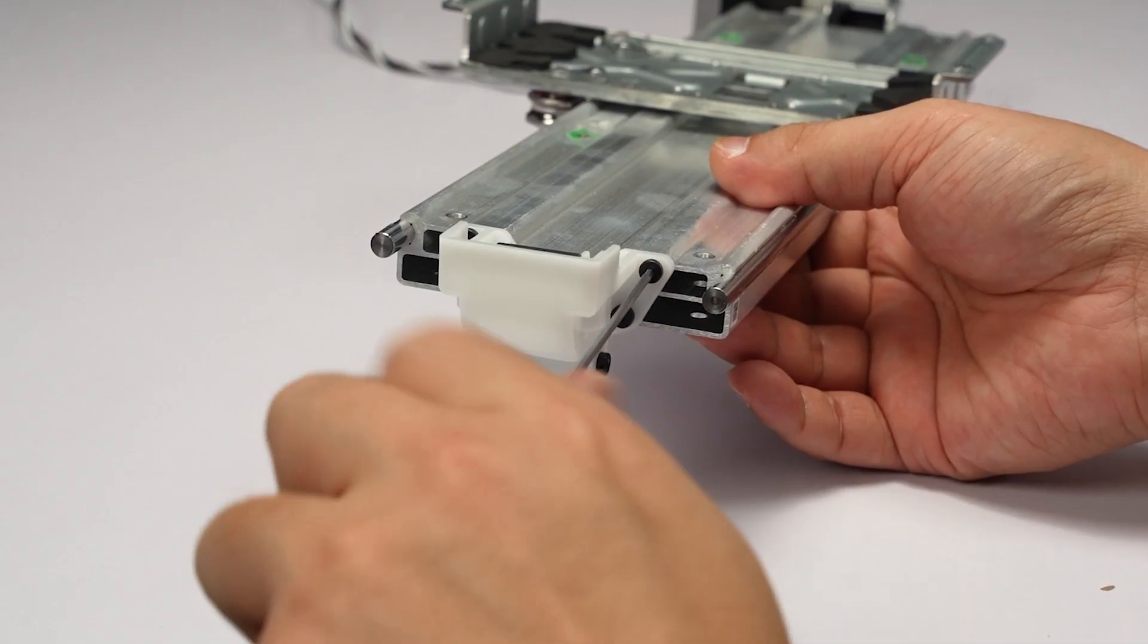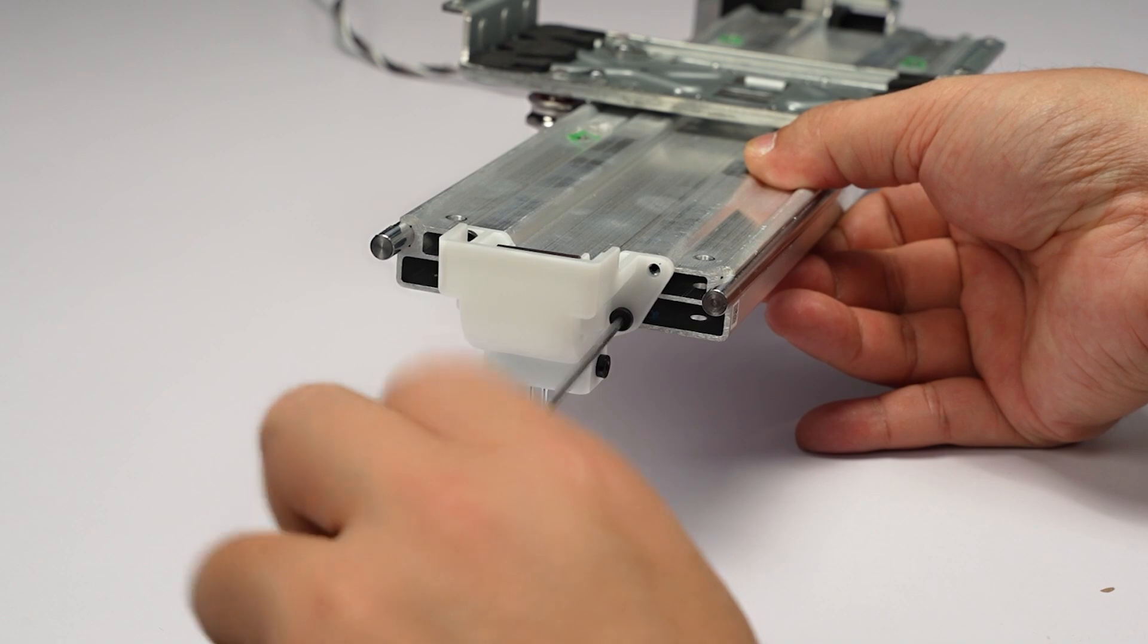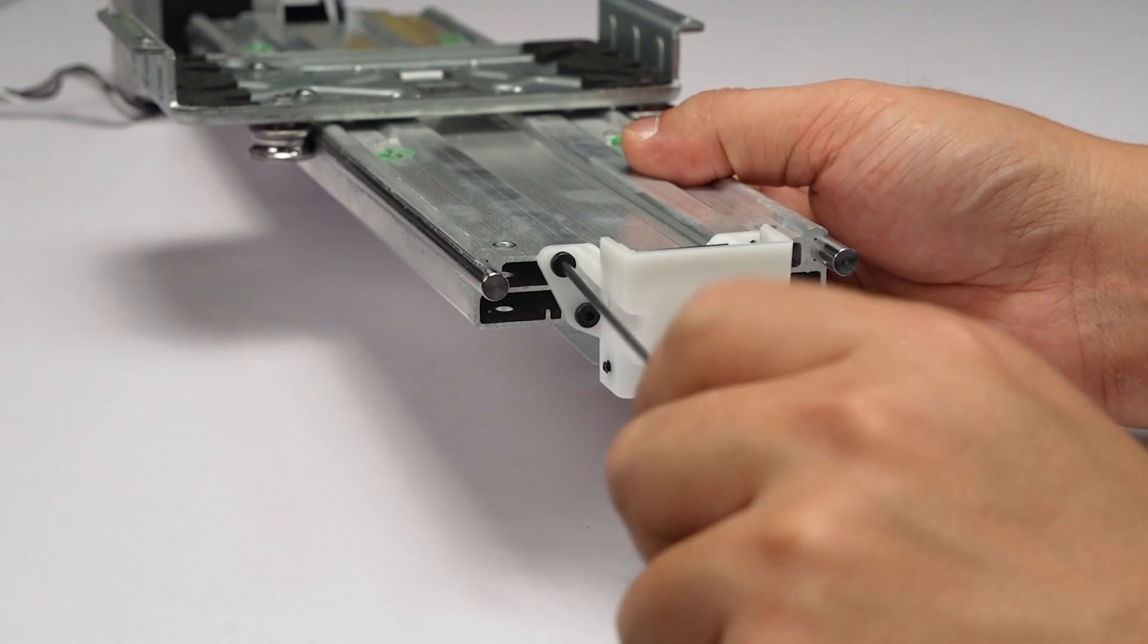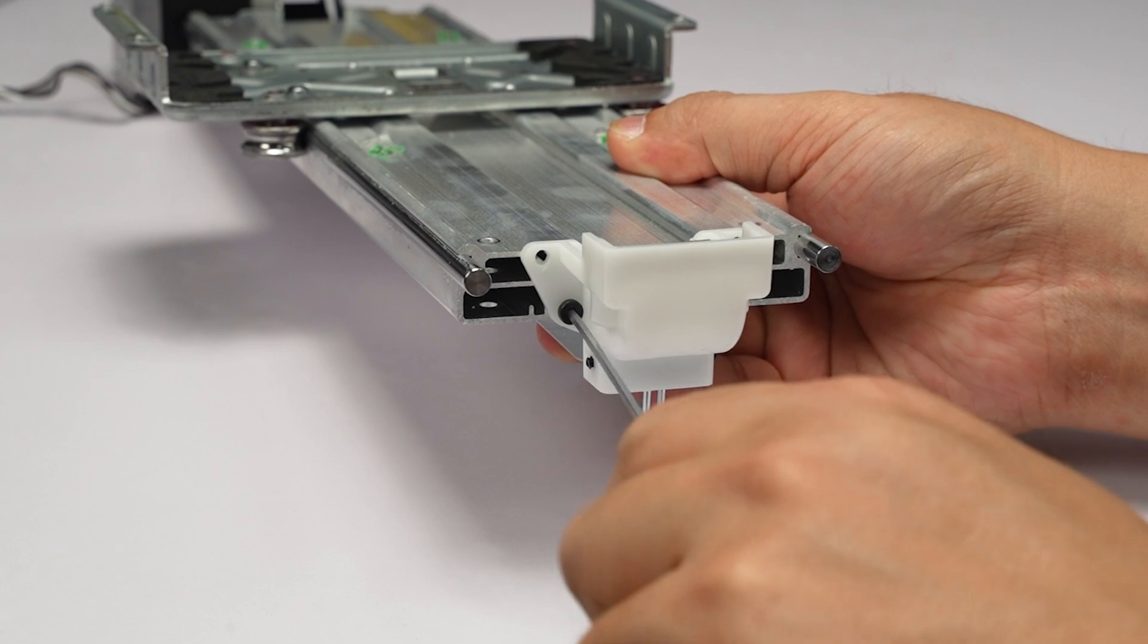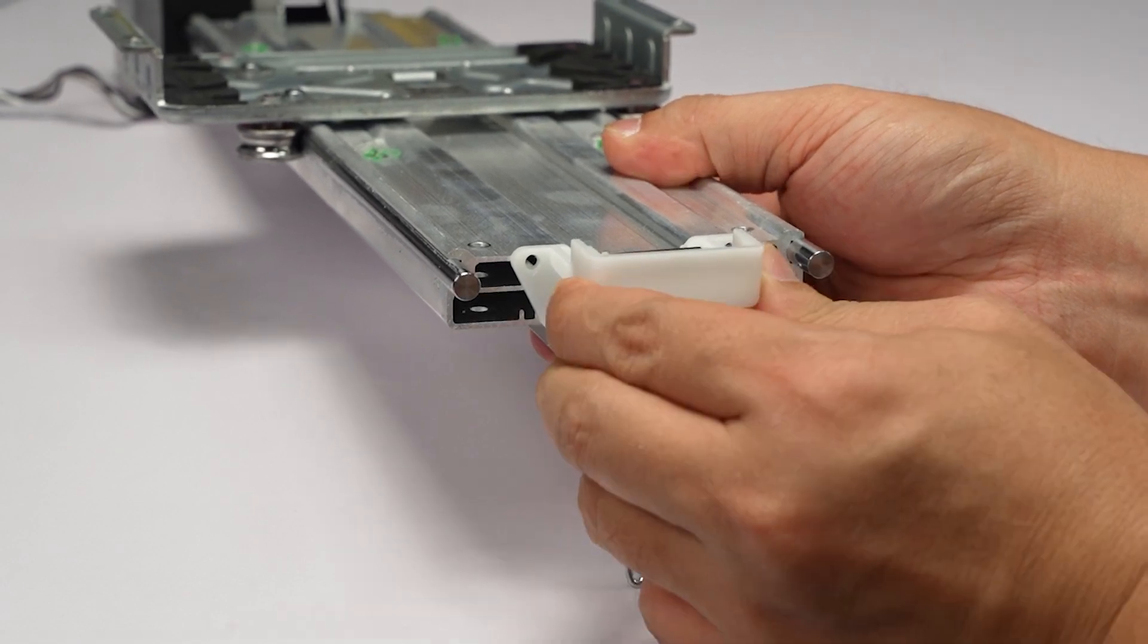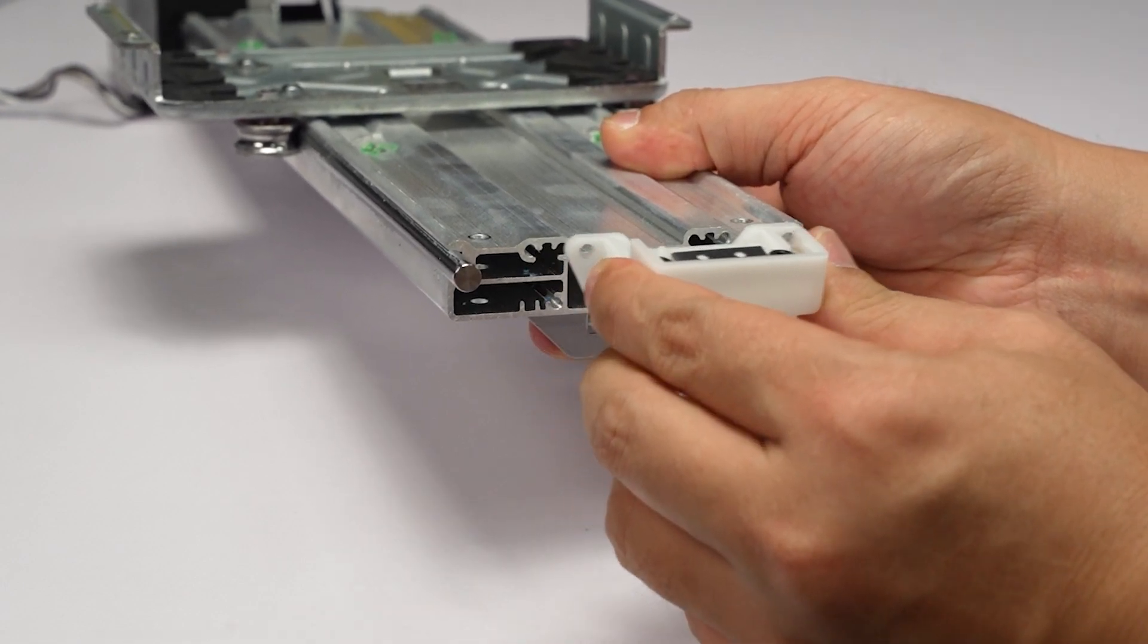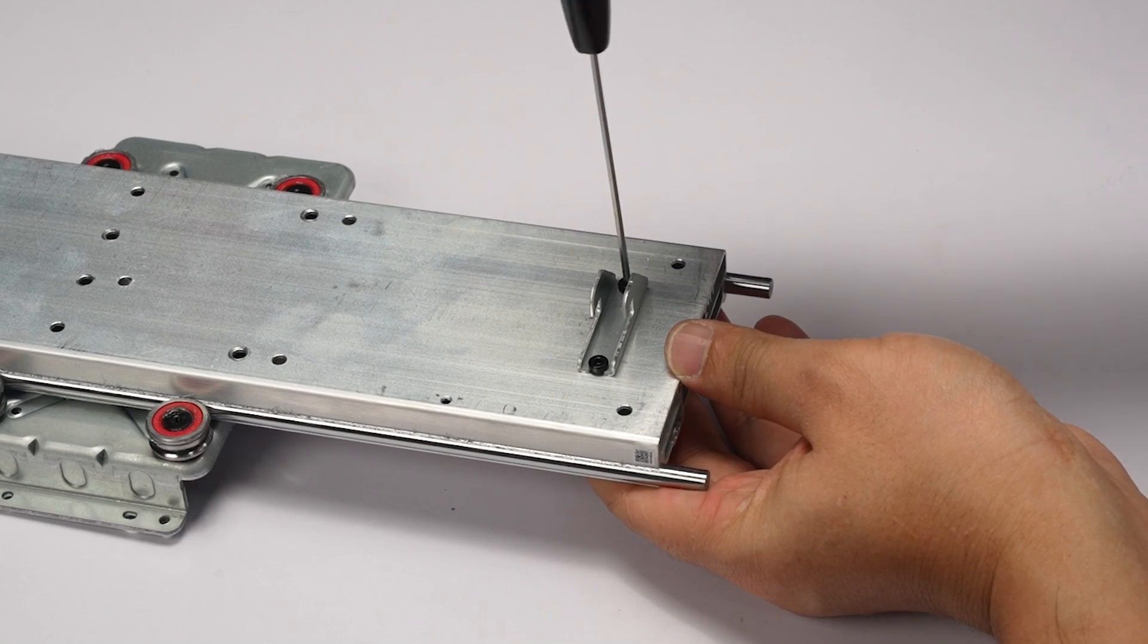Remove four screws in the Y tensioner. Remove two screws in the spring hook.